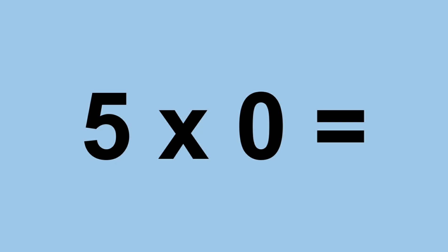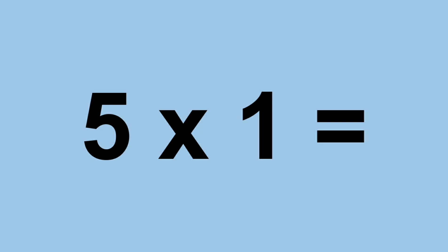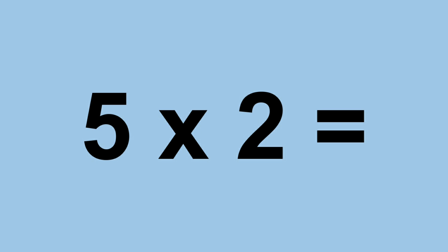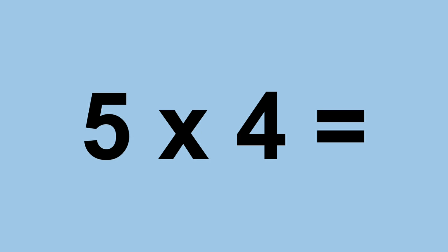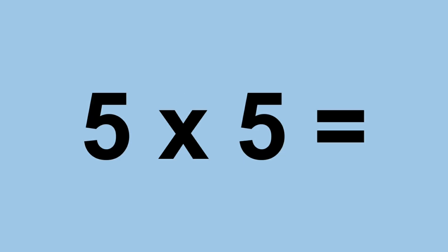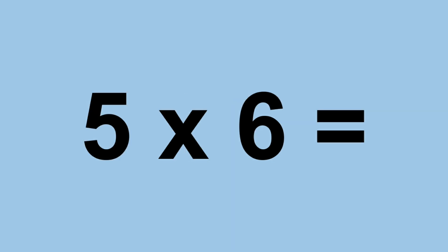Five times zero equals zero. Five times one equals five. Five times two equals ten. Five times three equals fifteen. Five times four equals twenty. Five times five equals twenty-five. Five times six equals thirty.